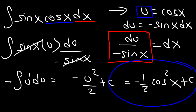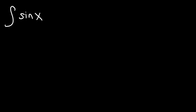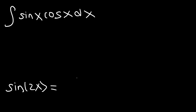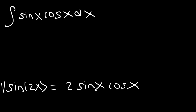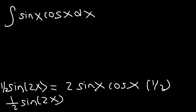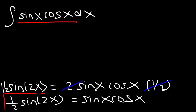This time u is cosine, so this is going to be negative one-half cosine squared plus C. That is the second way to represent the answer. Now let's focus on the third method. It has to do with the double angle formula of sine 2x. Sine 2x is equal to 2 sine x cosine x. So if we multiply both sides by one-half, we get one-half sine 2x on the left side, and on the right side it's just sine x cosine x.